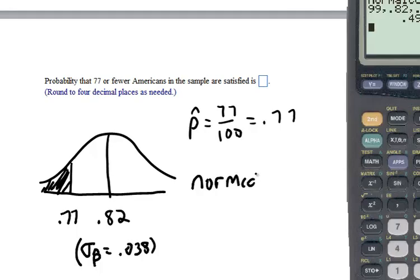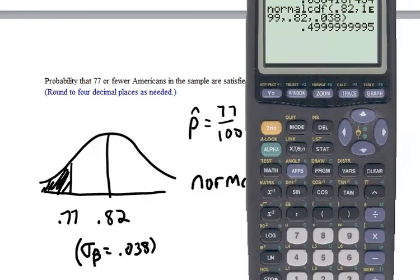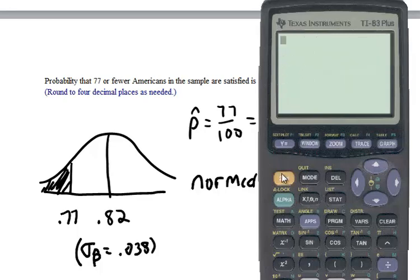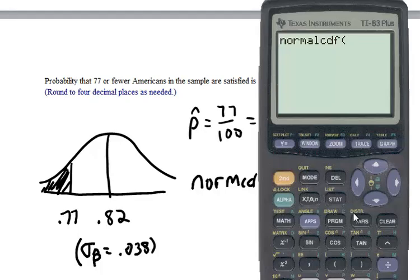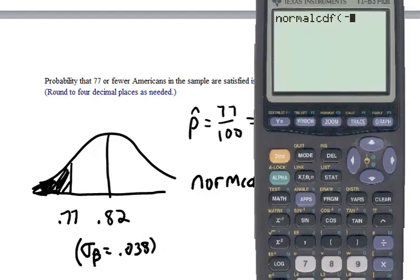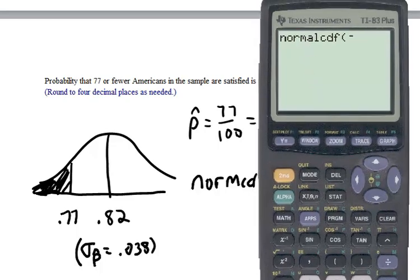So I'm going to do norm CDF. Left bound in this case, we're going out to negative infinity, so that's negative 1 E99, comma all the way up to 0.77. And then the mean, which is 0.82, and the standard deviation, which is 0.038.